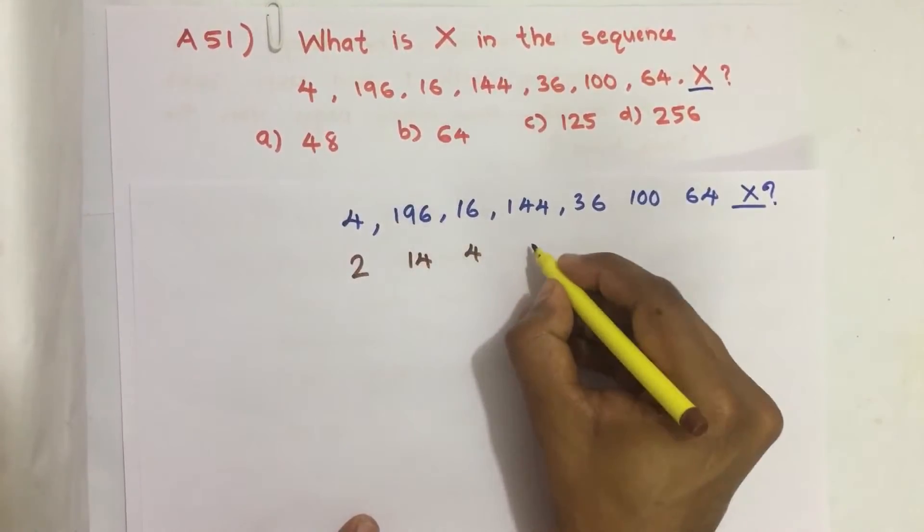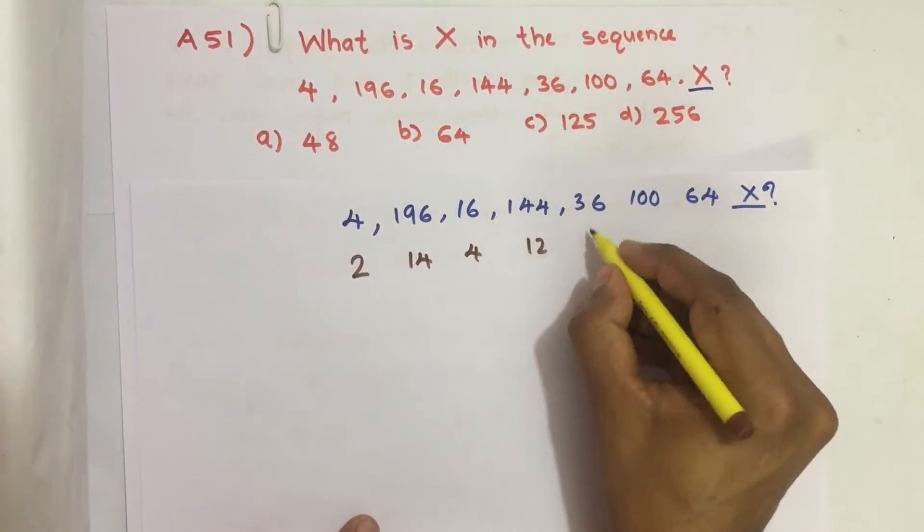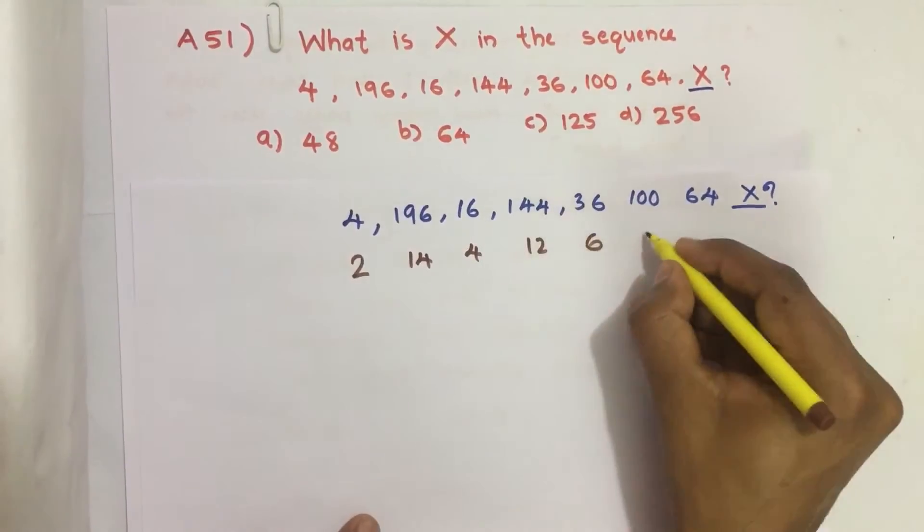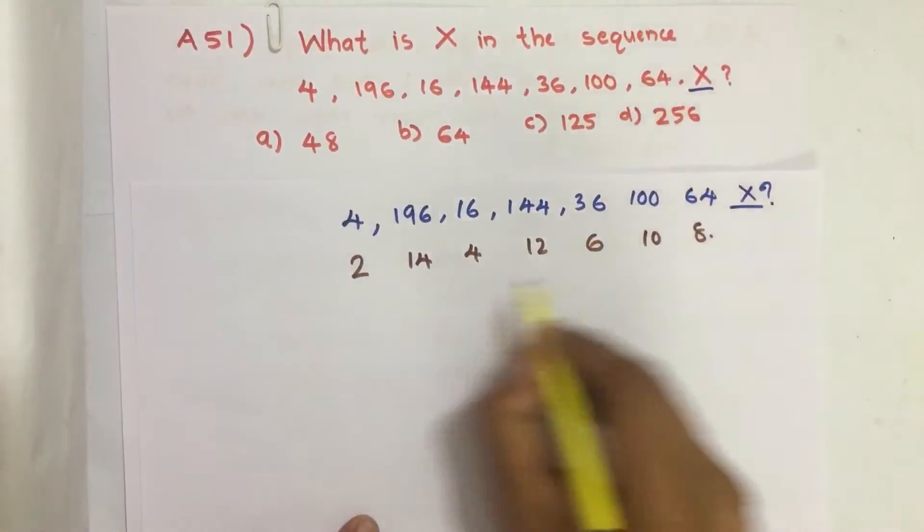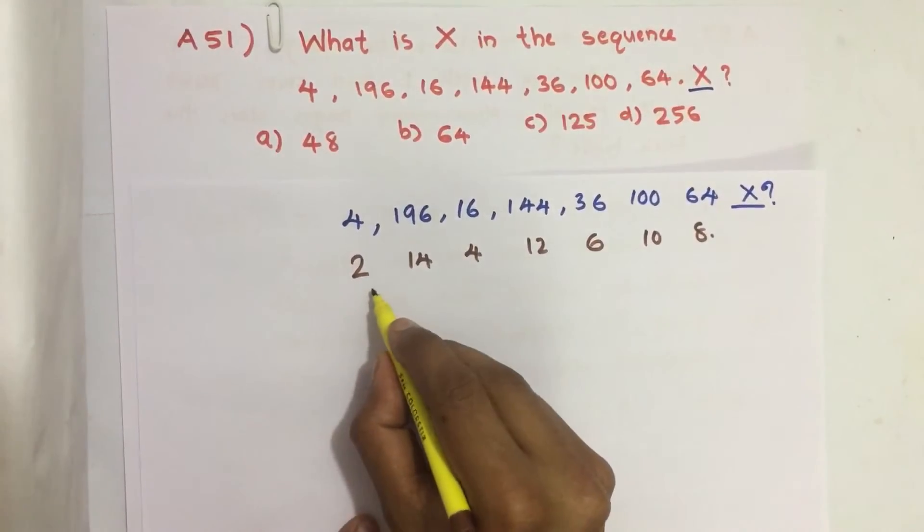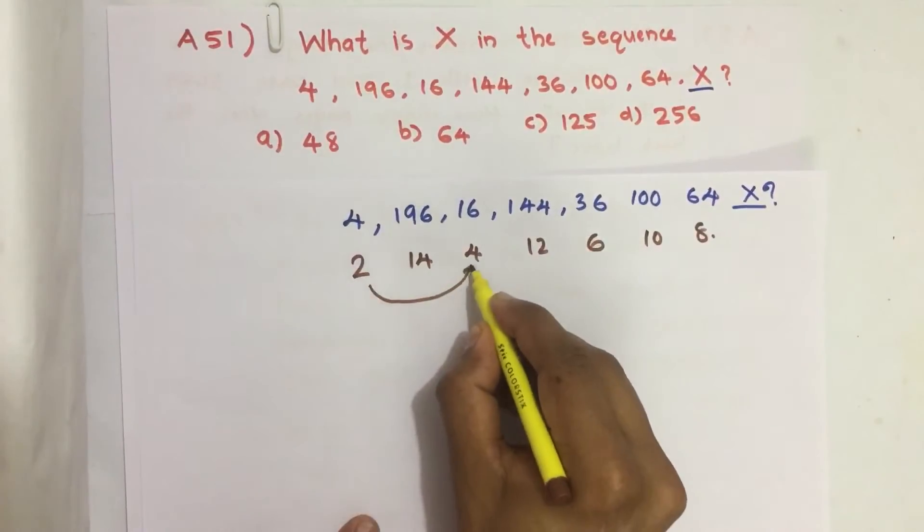100 is 10, and 64 is 8. Now we got another series: 2, 14, 4, 12, 6, 10, 8. This series is alternating - increasing then decreasing.